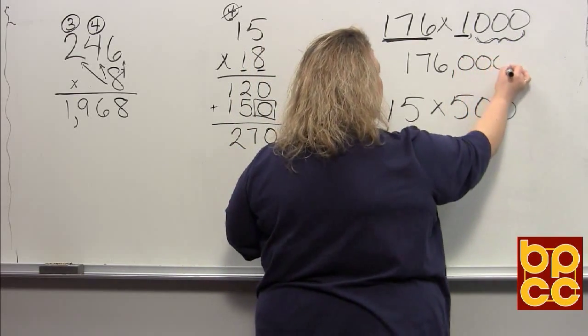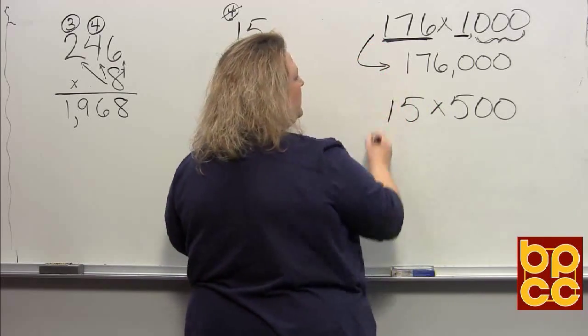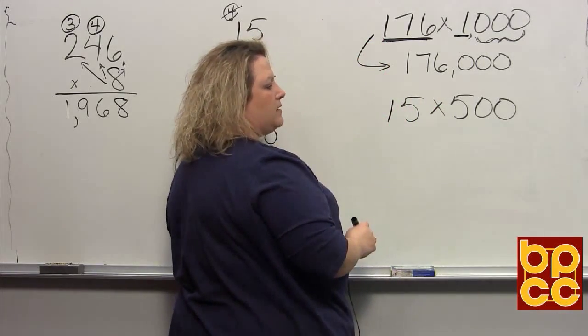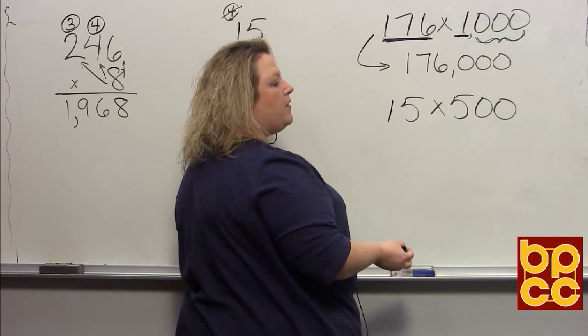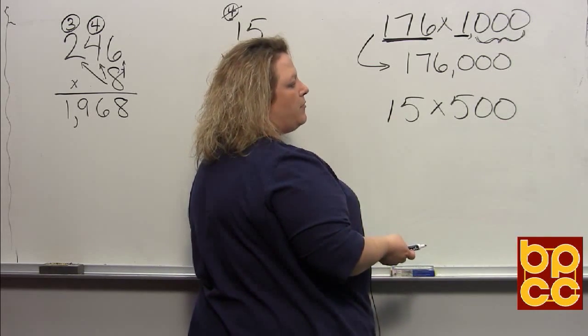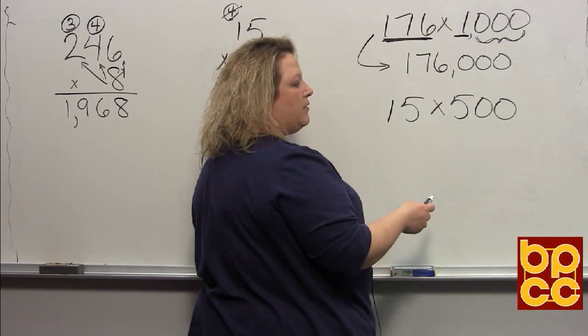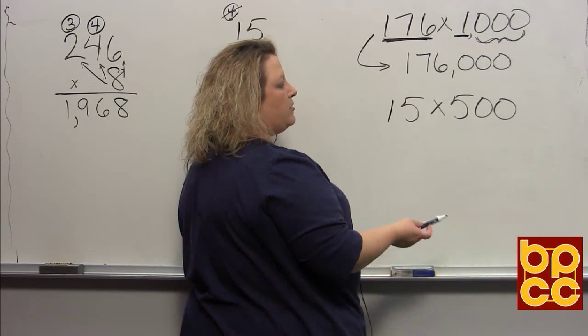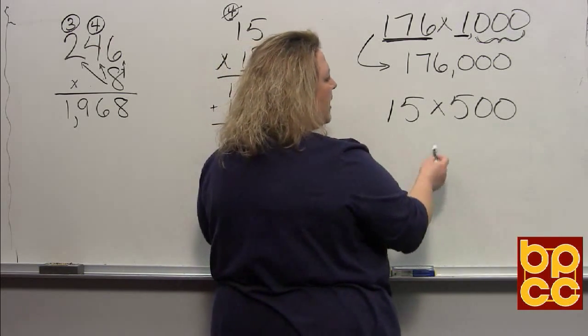Anytime you have multiplying numbers that end in zero, you can tack the zeros on to the end so you don't have to multiply with those.